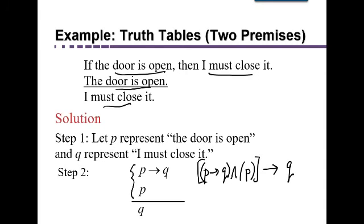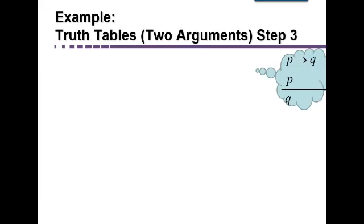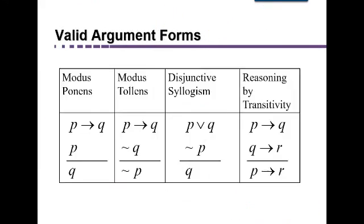That seemed like a valid argument. This takes the form P implies Q, which says if P happens, then we know Q is going to happen. And then it says P does happen, so therefore we can conclude that Q happened. This is a common argument form, along with several other common argument forms that are always valid.